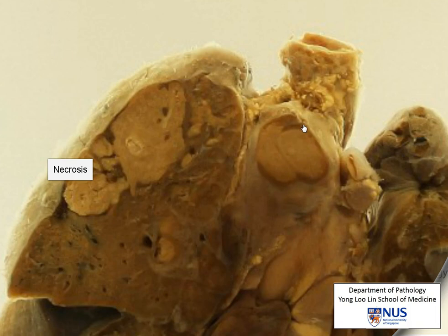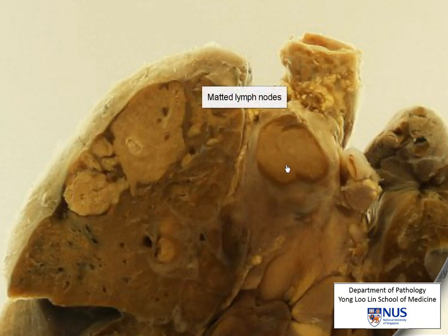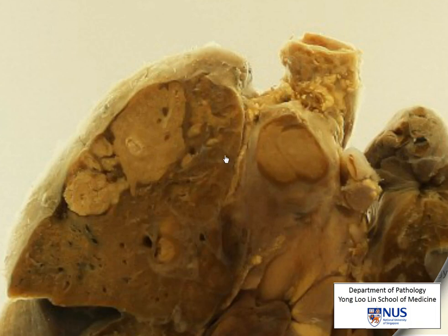Looking at the enlarged lymph nodes here, we can just about make out that there are actually two lymph nodes, but they seem to be stuck together. We call this appearance matted lymph nodes, and this is very classical of TB. When we see this abnormality — this pale area — it looks exactly the same as what's going on in the lung, so basically the same process is affecting the lung parenchyma as well as the lymph nodes.